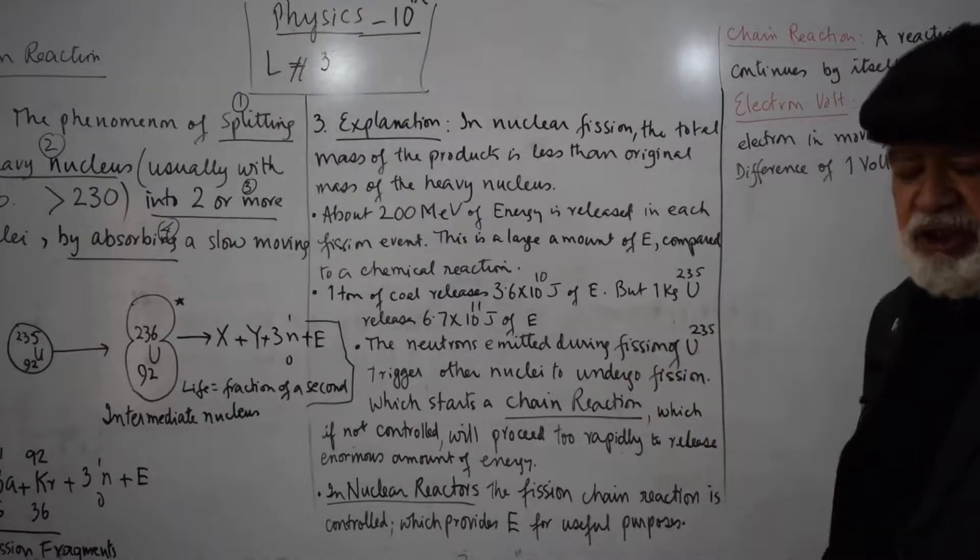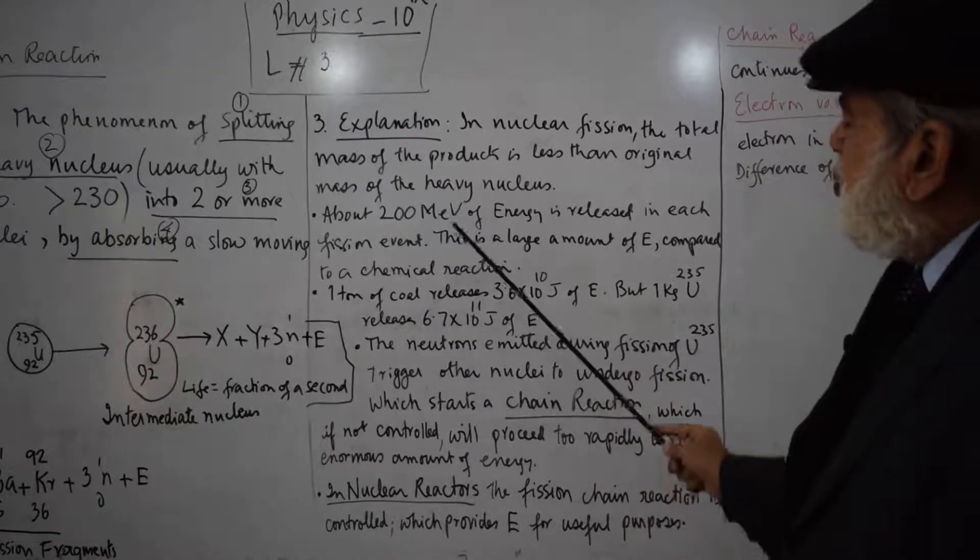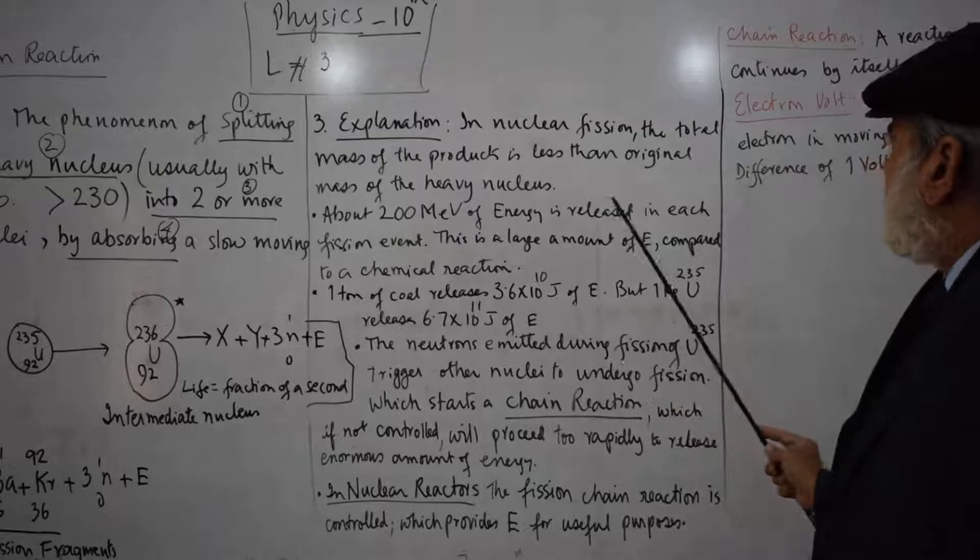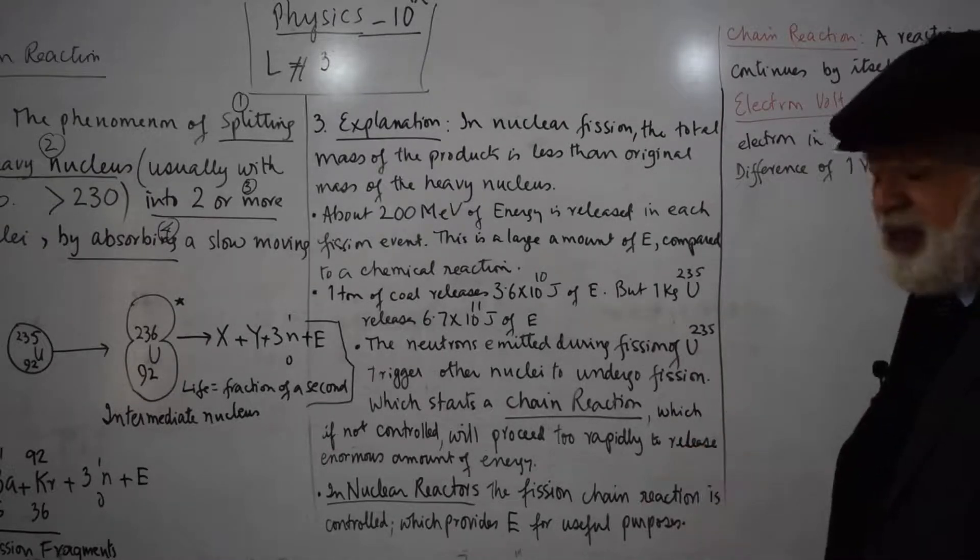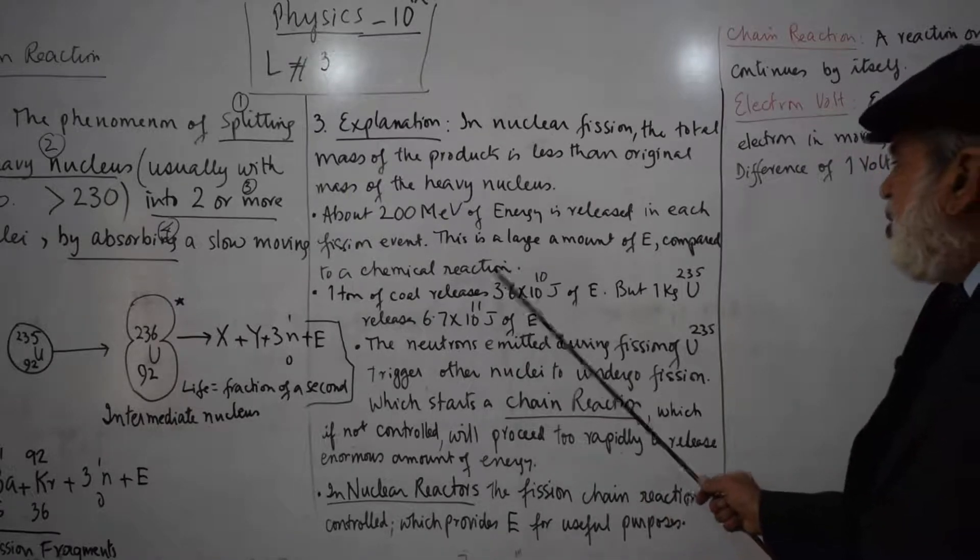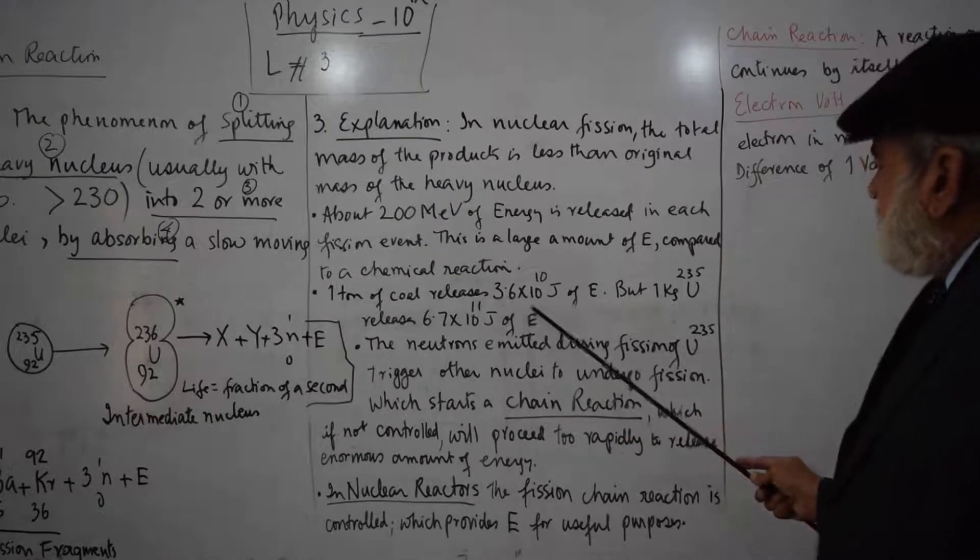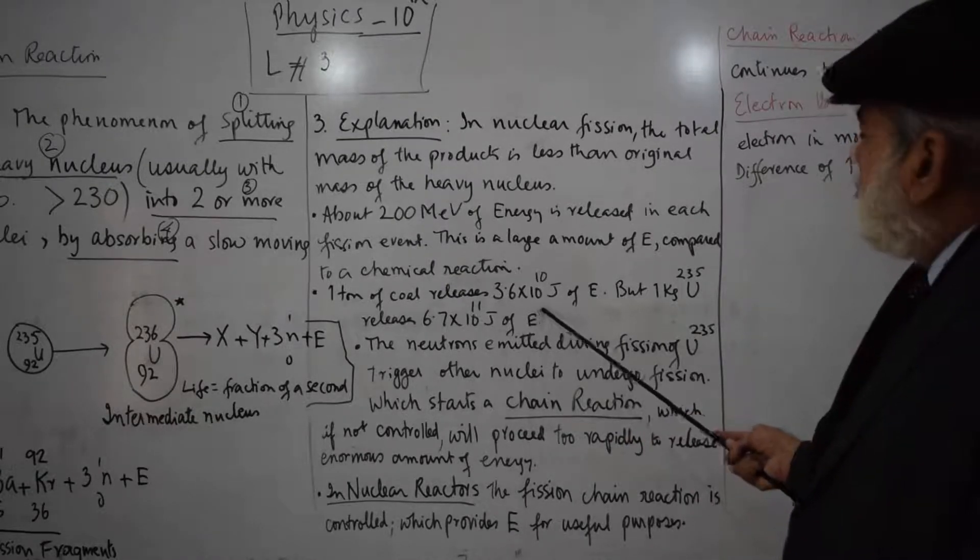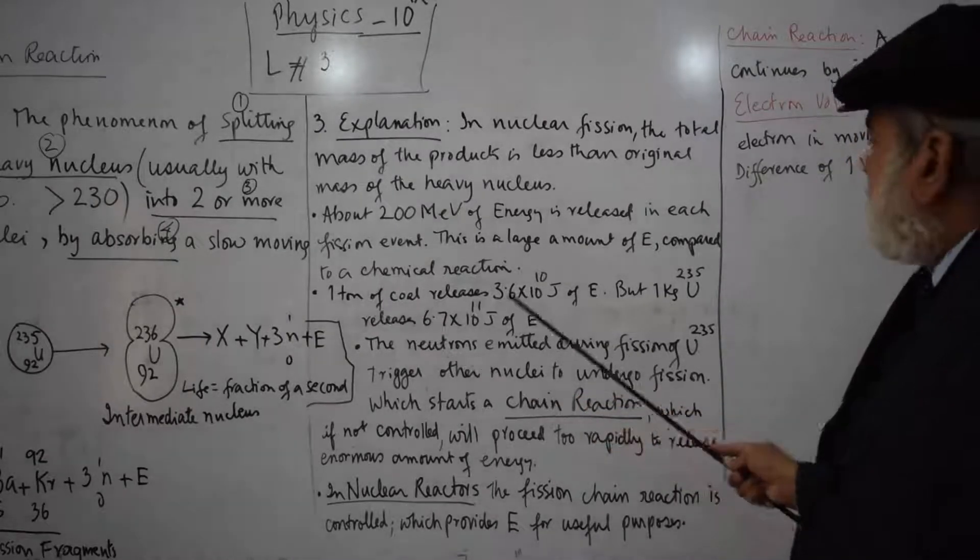So each fission event releases about 200 million electron volts. This is a large amount of energy compared to a chemical reaction. In a chemical reaction, one ton of coal releases 3.6 × 10^10 joules of energy. One ton of coal from chemical reaction.